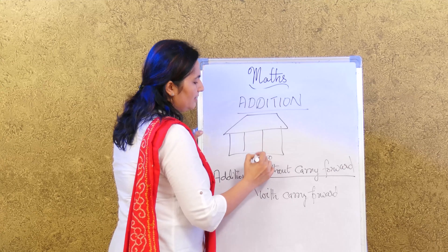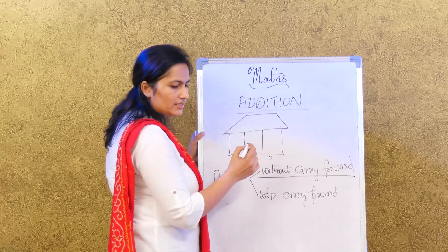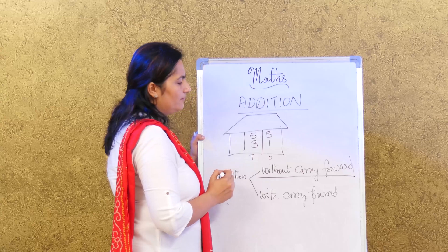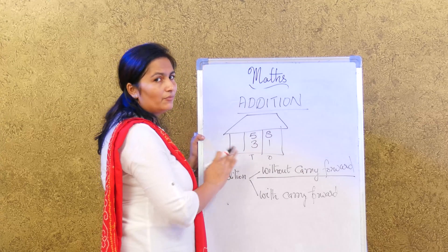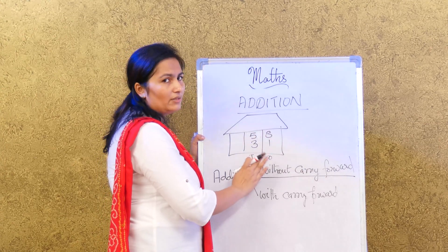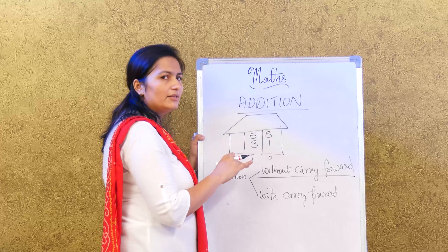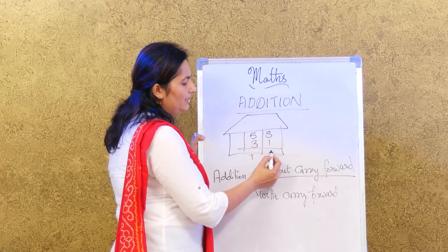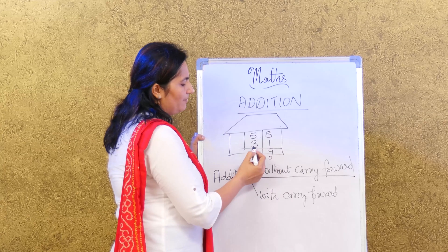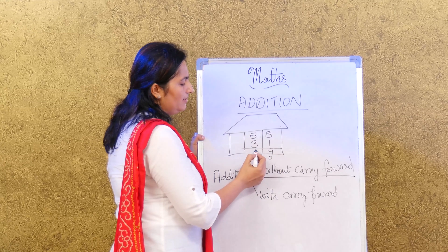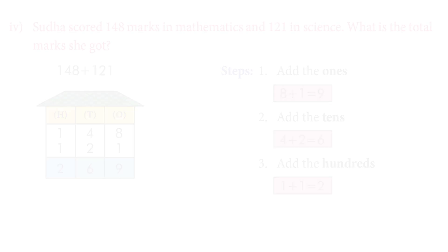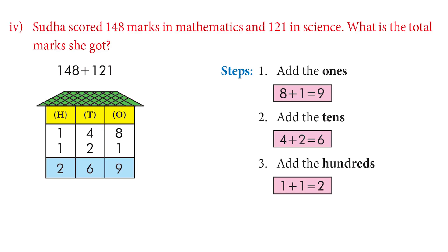The sum that is given is 58 and 31. Remember, we do not have to carry forward anything. So let's see what the answer is: 8 plus 1 is 9, 5 plus 3 is 8. So we got the answer 89.